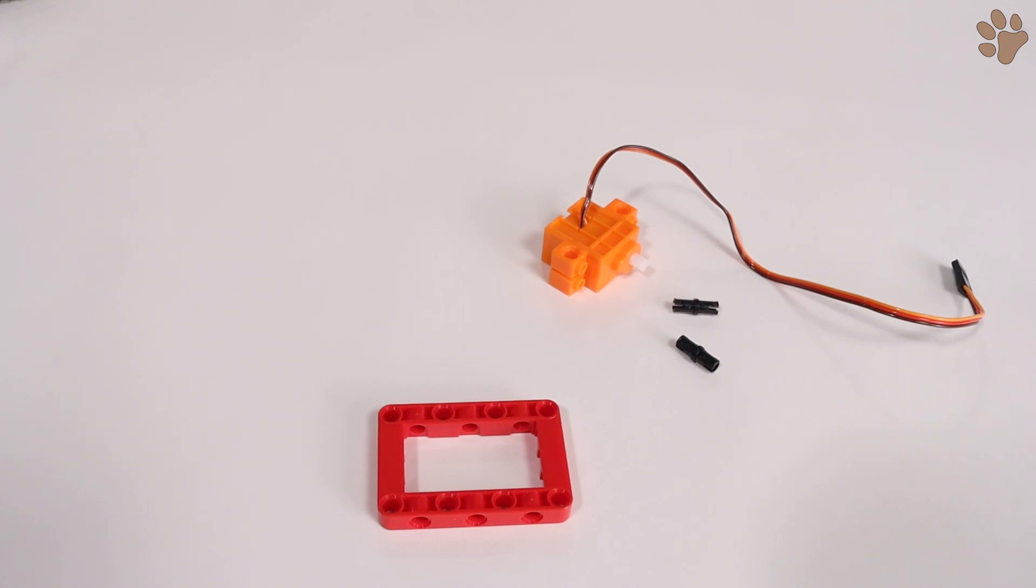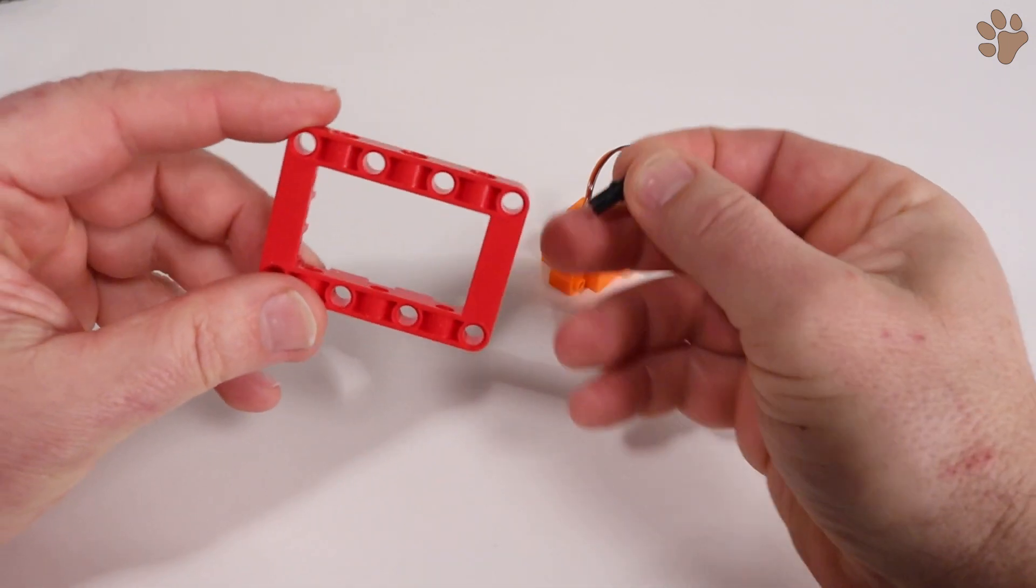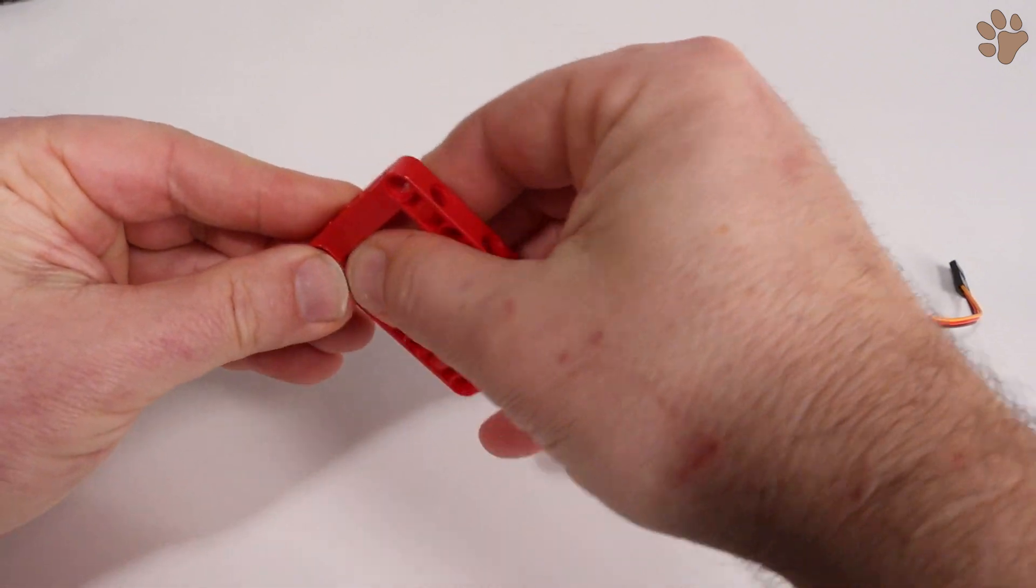We'll start by attaching the servos to frame pieces using pins. Each assembly will need one servo, one frame, and two pins.